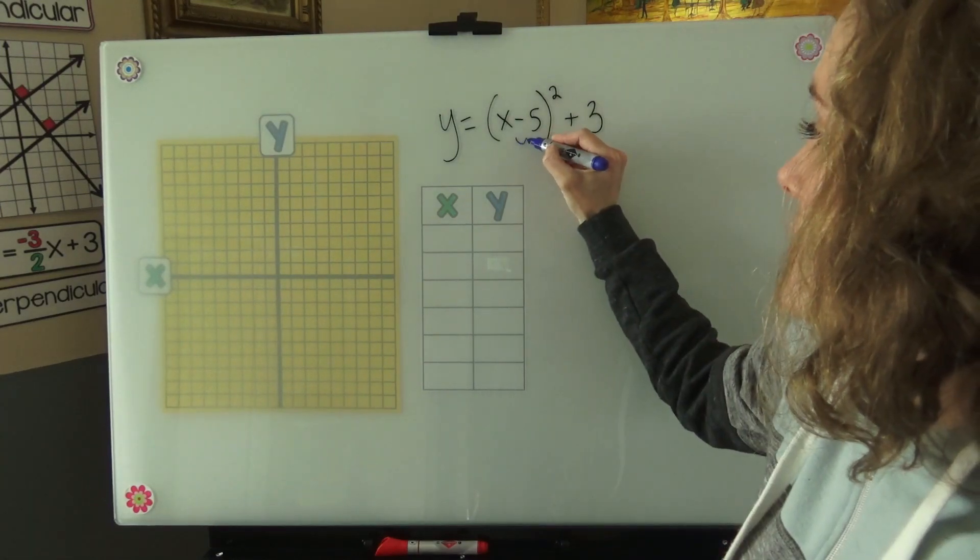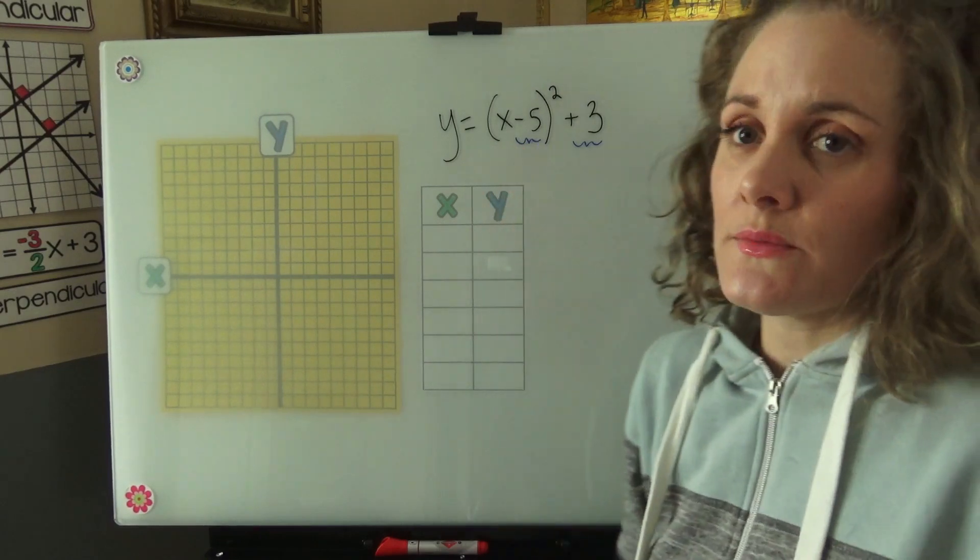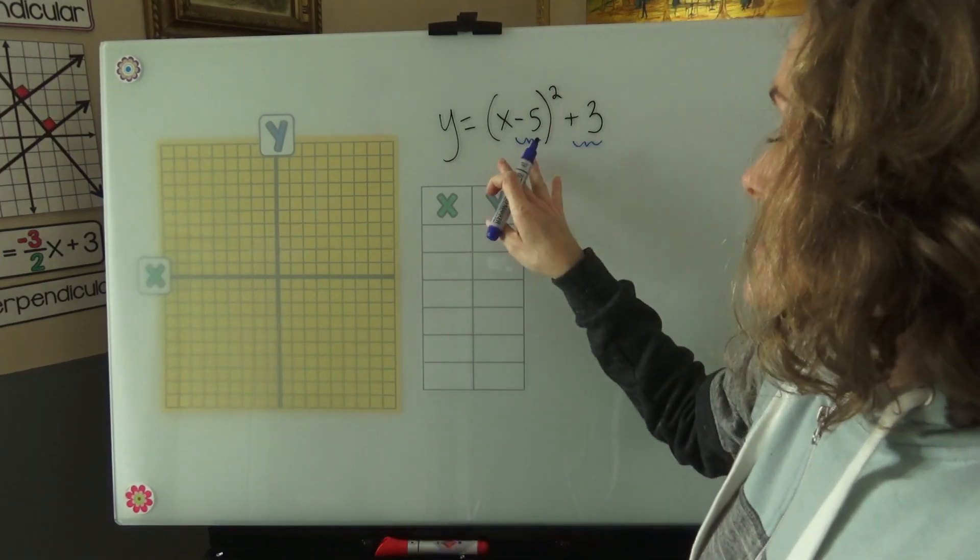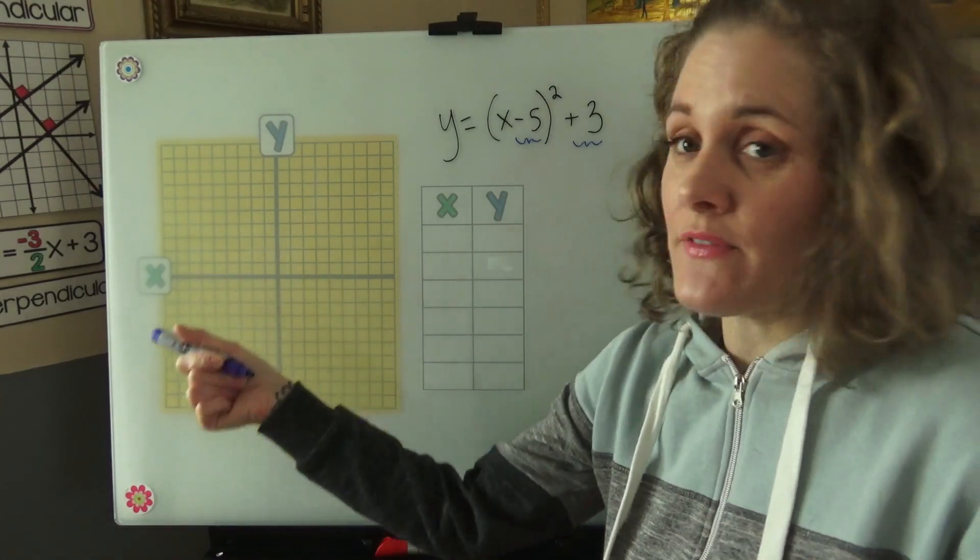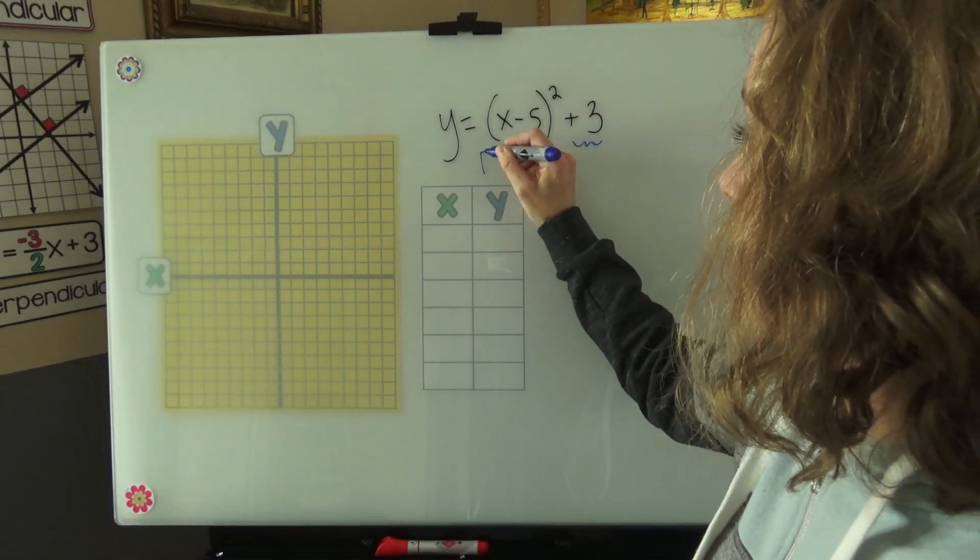So we have this negative 5 and this plus 3. Now inside the parentheses, we have to think opposite. So negative 5 usually would go backwards 5 or left 5 on the x-axis, but in this case it's going to go right 5. So I'm just going to write right 5.